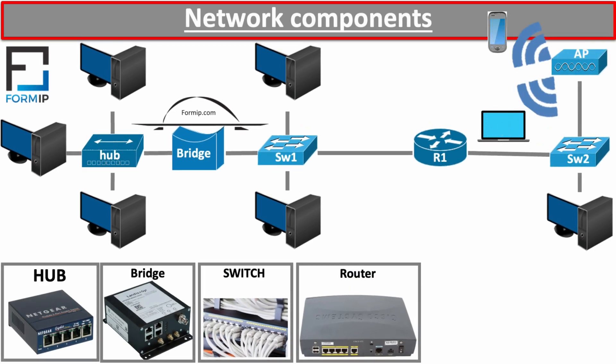Now, going back to our network diagram, let's look at the wireless access point. The wireless access point is basically a wireless hub used by wireless devices. It connects to a wired network and relays data between the wired network and wireless devices so they can communicate. In the diagram, we see a wireless access point connected to the network by the switch, so that a laptop and smartphone can communicate with the network.